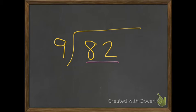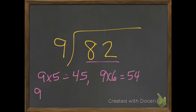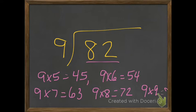I am going to start at 9 times 5 because I know that is 45. 9 times 6 equals 54. 9 times 7 equals 63. 9 times 8 equals 72. That is getting closer. 9 times 9 equals 81.